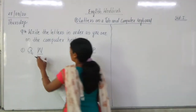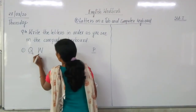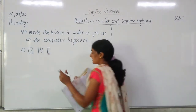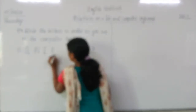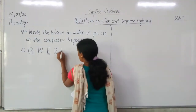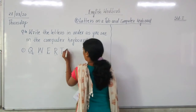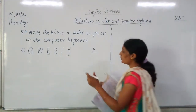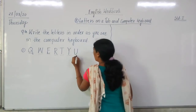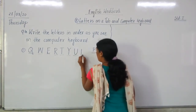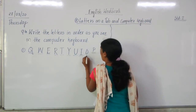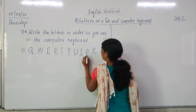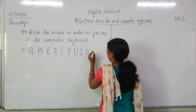There is W. After that is E, after that is R. After R is Y. Next one is U, then I, and O.